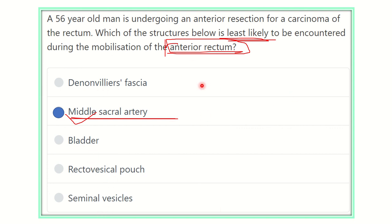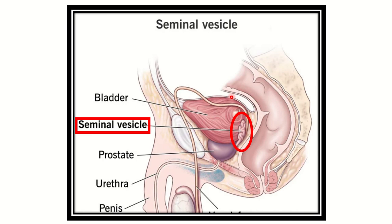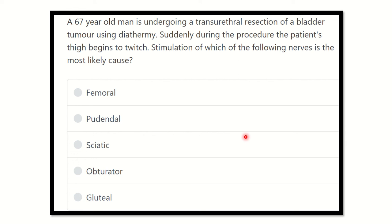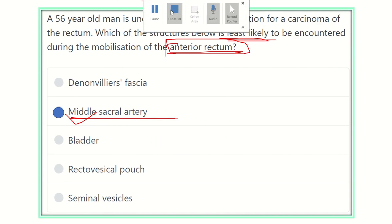The other structures — Denonvilliers' fascia, bladder, rectovesical pouch, and seminal vesicle — all lie anteriorly. The rectovesical pouch lies between the rectum and the urinary bladder, and would be encountered during anterior mobilization. Thank you all.